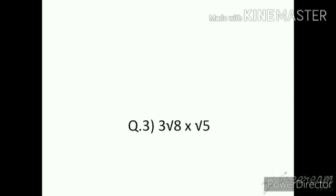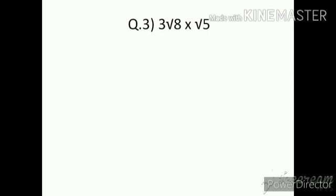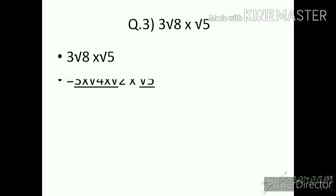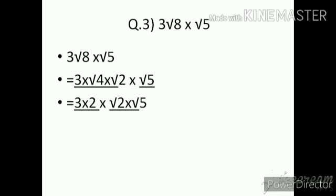Question number 3: √8 × √5. Split 8 as 4 × 2. So: √4 × √2 × √5. √5 cannot be split, so keep it as is. 4 is a perfect square giving 2, so: 2 × √2 × √5 = 2√10.